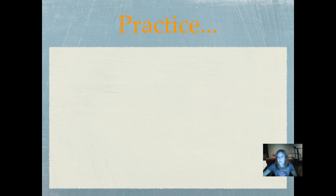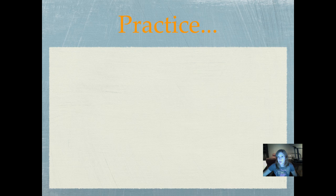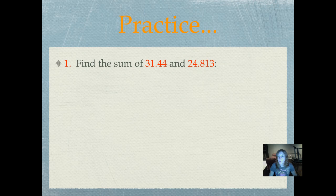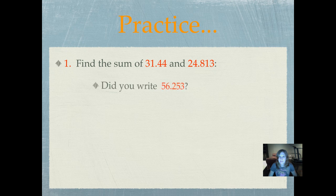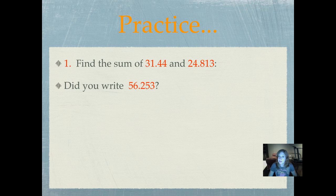Okay, we're going to work some practice problems. If you need to watch that example that we just did again, go ahead and rewind it and watch it again. You can always rewind or pause anytime you need to in these lessons. Here is our first practice problem. Number one, find the sum of 31.44 hundredths and 24.813 thousandths. Make sure in your journal when you're working this problem out that you line your decimals up and that you check it using the opposite operation. Did you write 56.253 thousandths?